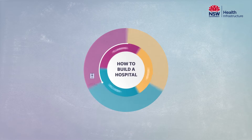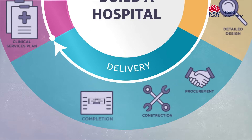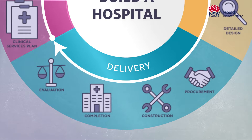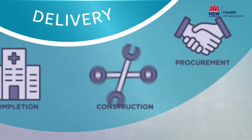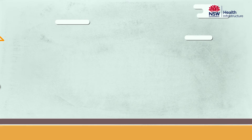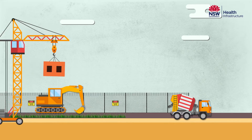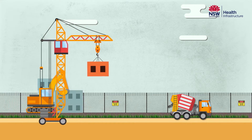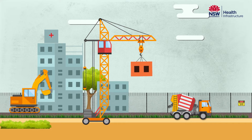Once our detailed design is finalised, we move into the delivery phase. This starts by issuing a tender to engage a construction company that can build a high-quality health service on time and to budget. Construction involves enabling work such as installing site fences and site offices, early works such as demolition and installation of in-ground services.